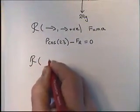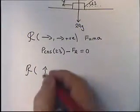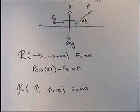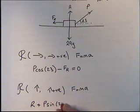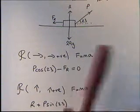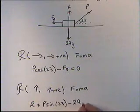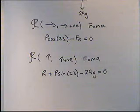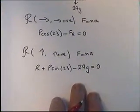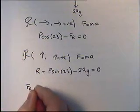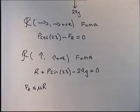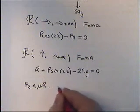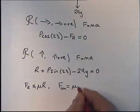If in doubt, resolve in the other direction. So this time we're going to resolve vertically, and I'm going to take up as positive. F equals ma again, so the forces acting up are R and P sin 23. The force acting down — negative because we've taken up to be positive — is minus 29g, and that equals zero. We've now got two equations with unknowns. When a particle is moving, normally friction is less than or equal to μR, where μ is the coefficient of friction and R is the normal contact force. When things are moving, we've reached the limit of friction, which means friction equals μR.